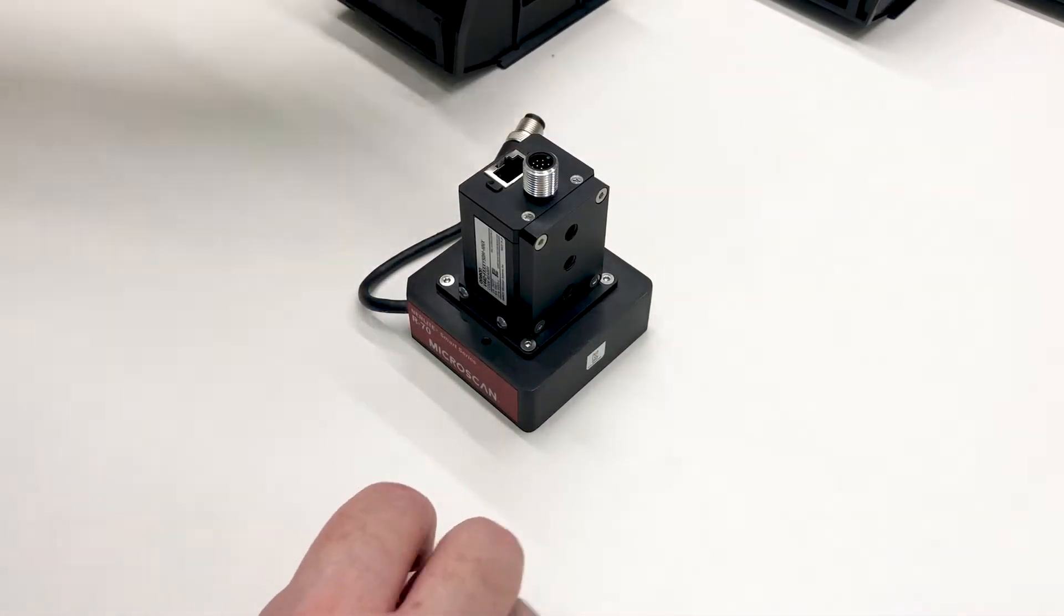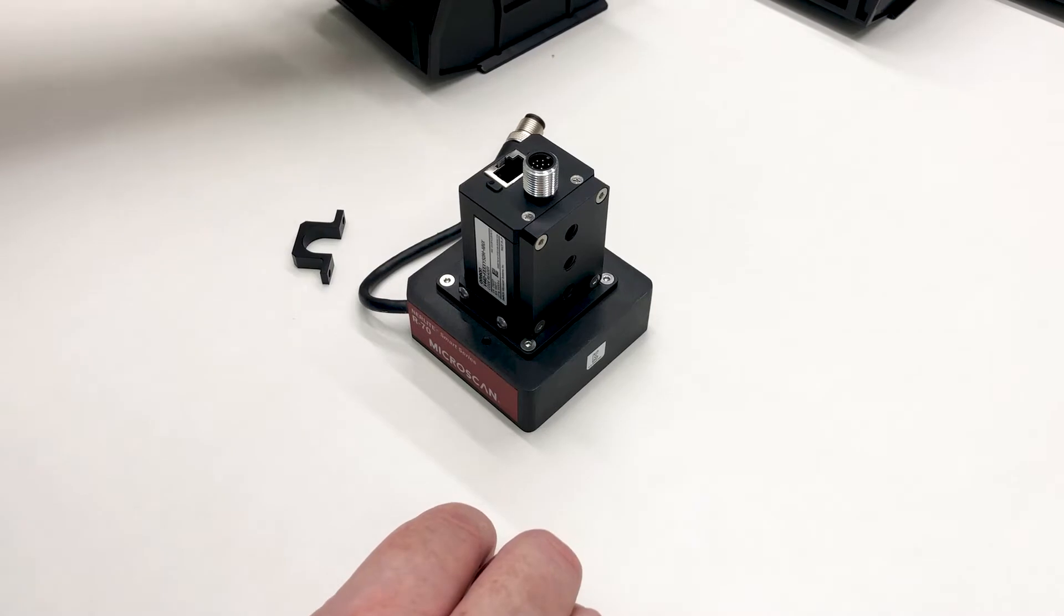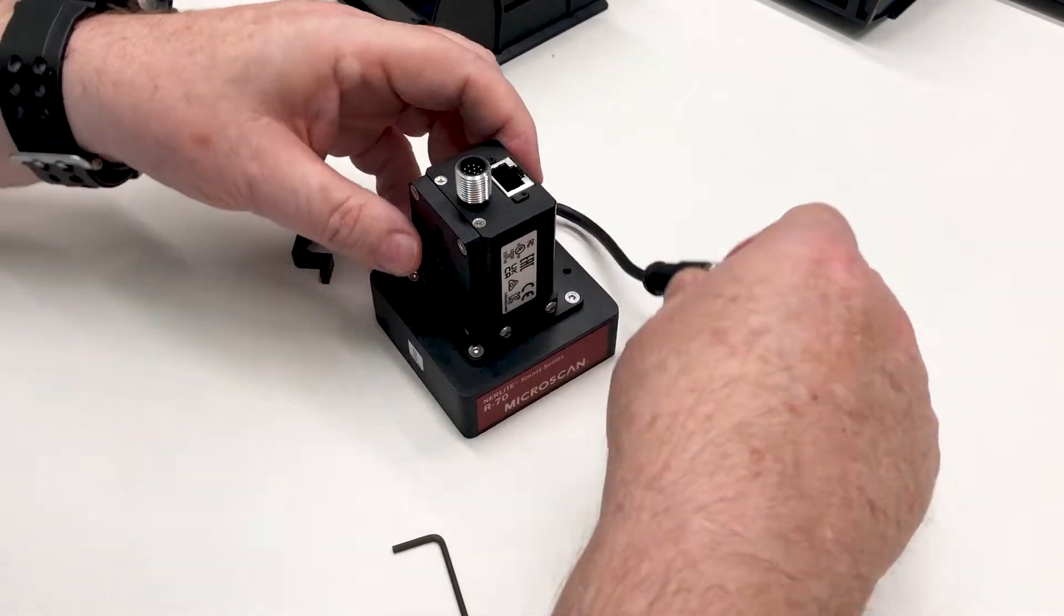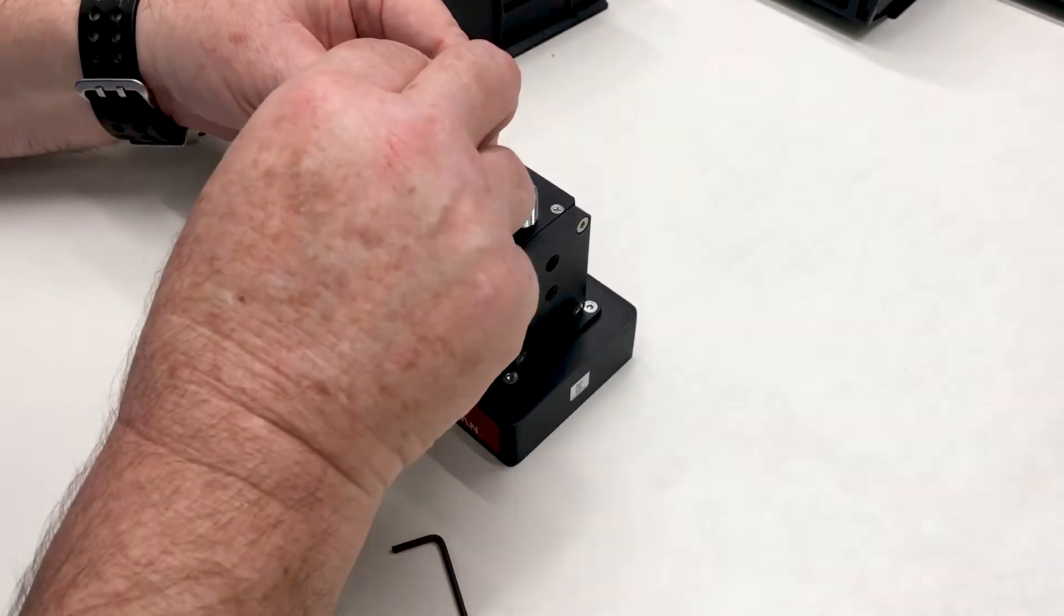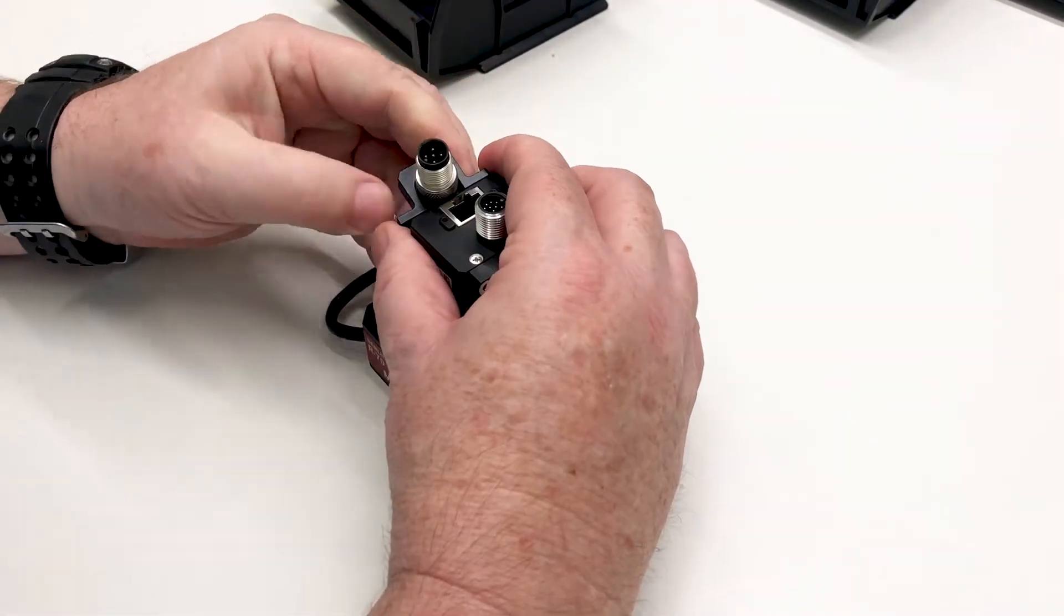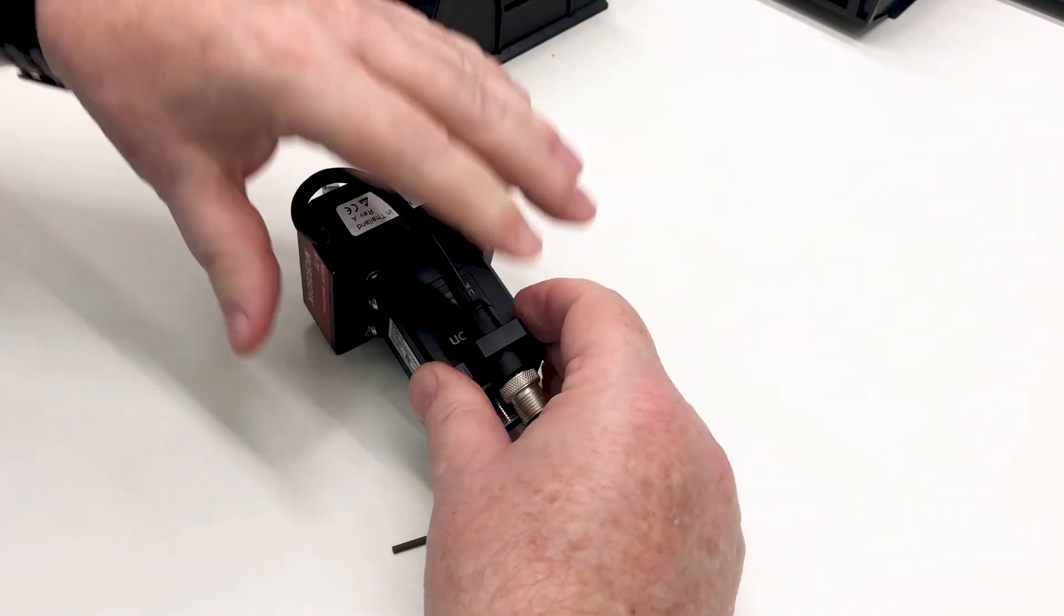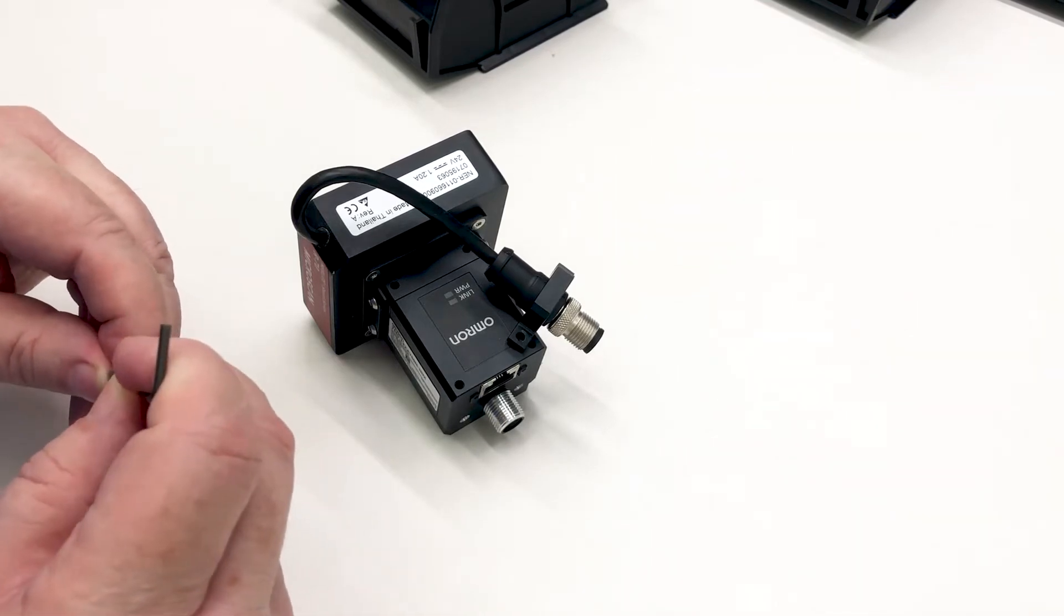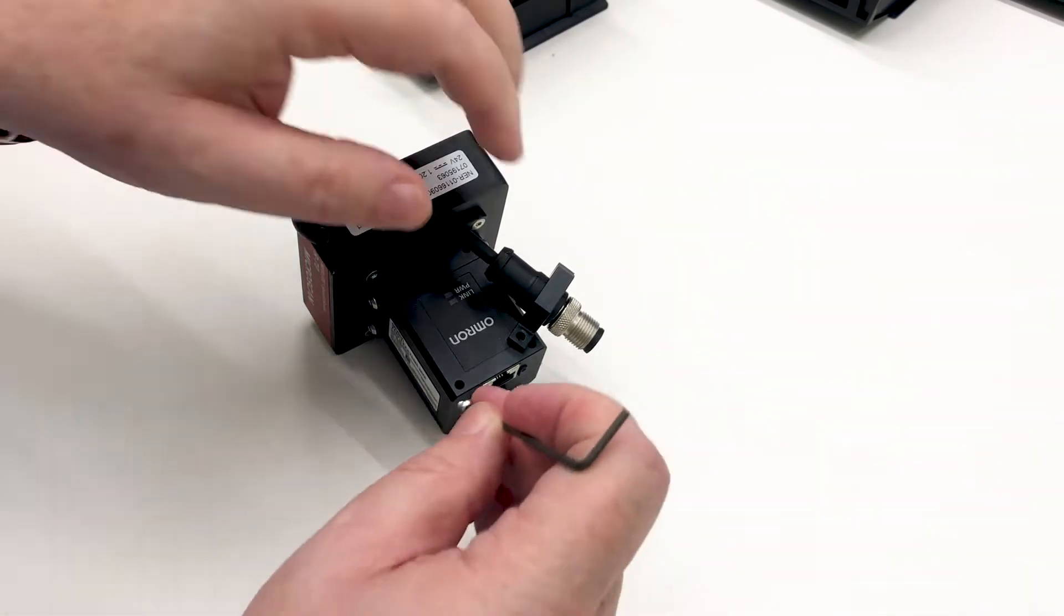Attach the cable strain relief using the supplied button head screws. You want to position the strain relief flush with the insulation on the cable, again using the same 2mm hex wrench.